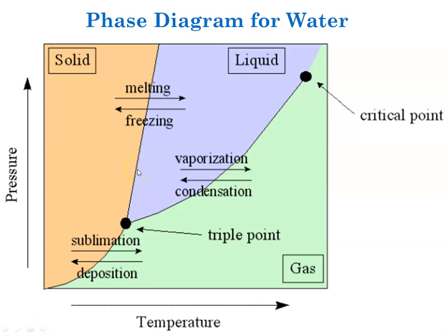Another thing that we often see on these types of phase diagrams is being able to read the so-called normal melting, freezing, boiling, or condensation point. And so normal refers to at standard pressure. So you would look for standard pressure, and then you would find that phase transition.